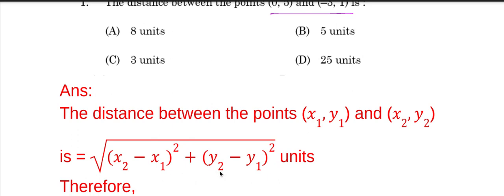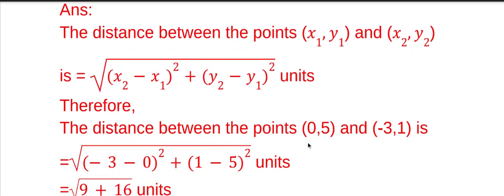Therefore, the distance between the point (0, 5) and (-3, 1), we are taking 0 as x₁, 5 as y₁, -3 as x₂, and 1 as y₂.